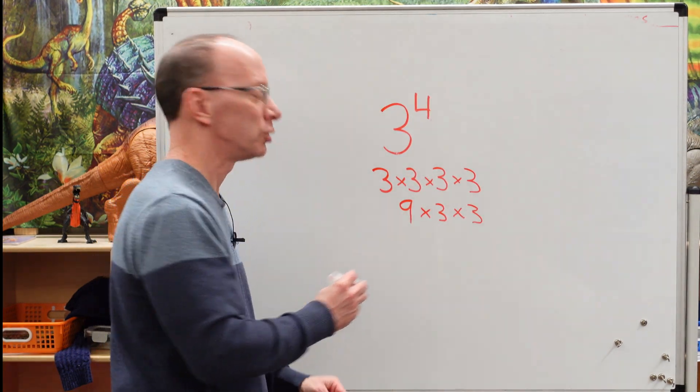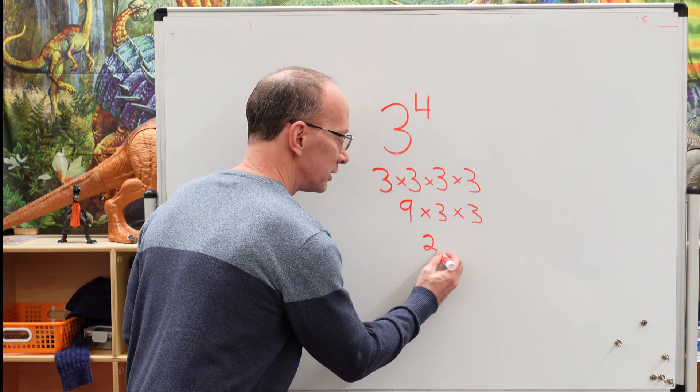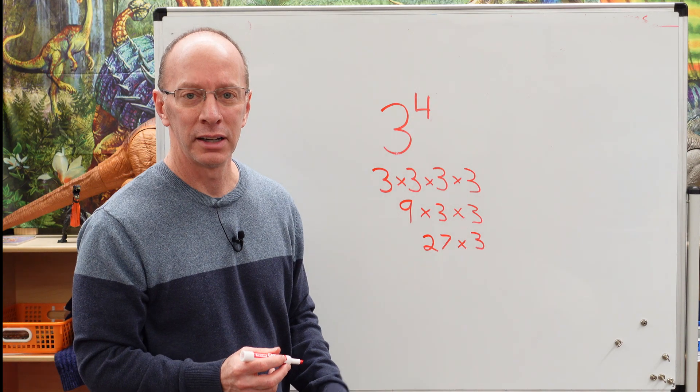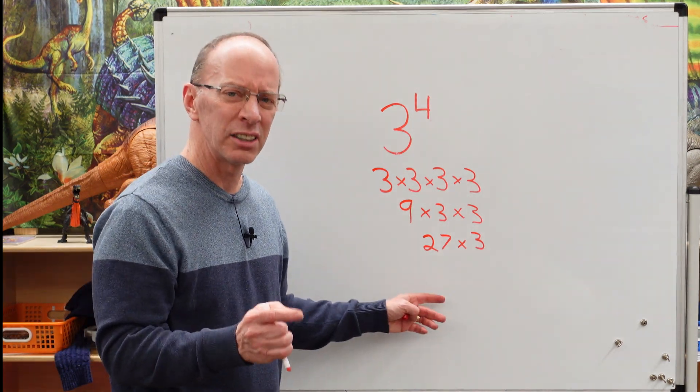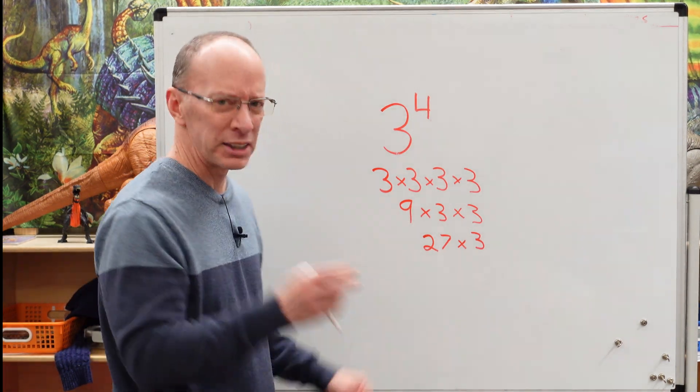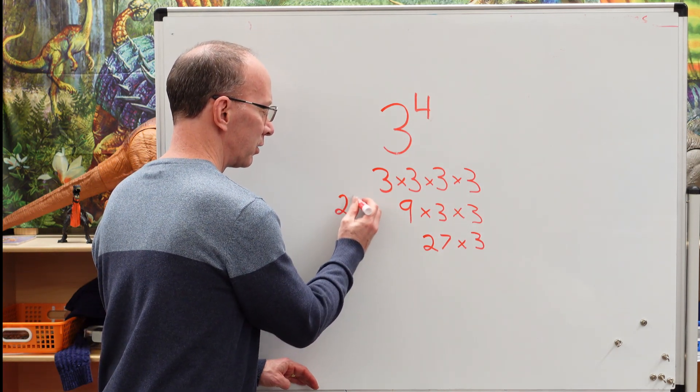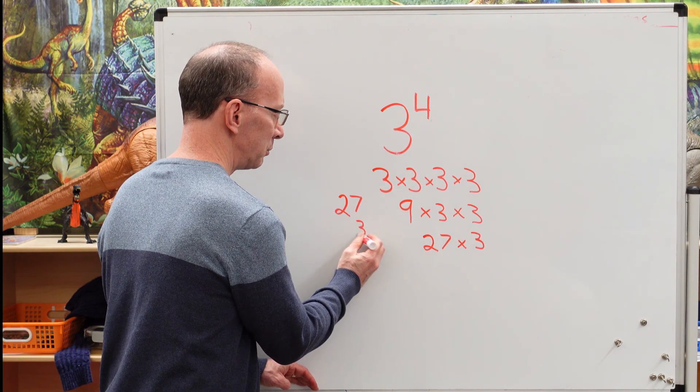Nine times three is 27. So I'll put a 27 here. And now I need to multiply 27 times three. Now I got to do a little more work here. I'm not sure what 27 times three is. So I'm going to do a little figuring off on the side here. So I go 27 times three.